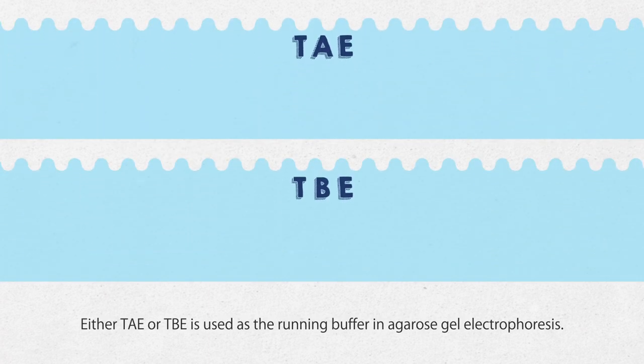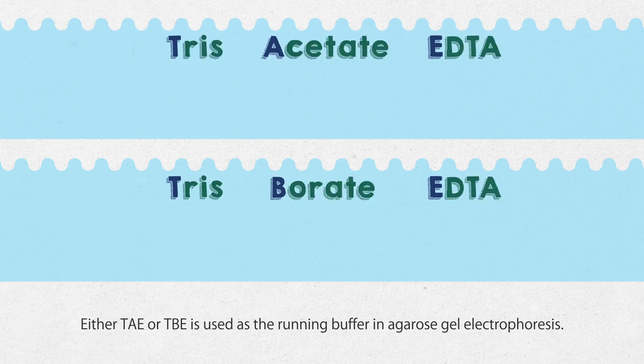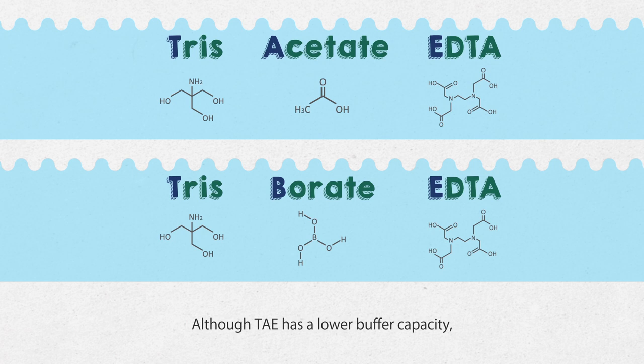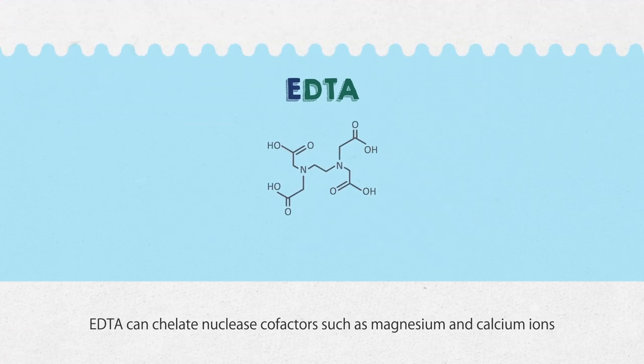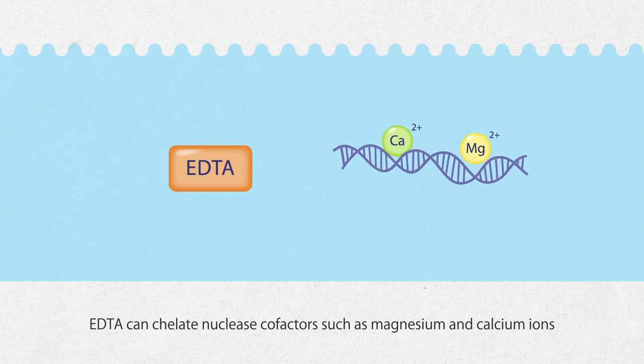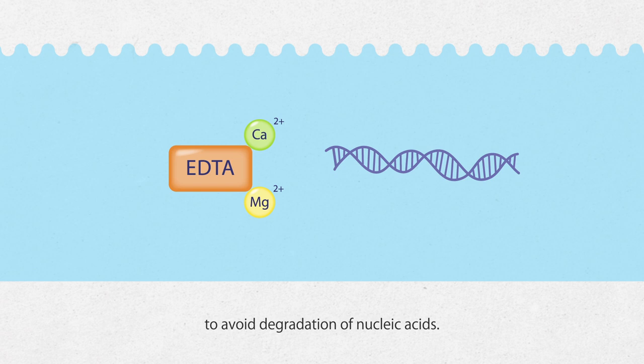Either TAE or TBE is used as the running buffer in agarose gel electrophoresis. Although TAE has a lower buffer capacity, linear double-stranded DNA runs faster in TAE. EDTA can chelate nuclease cofactors, such as magnesium and calcium ions, to avoid degradation of nucleic acids.